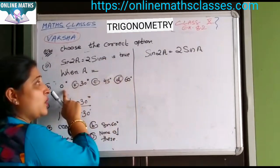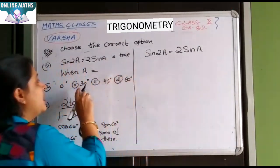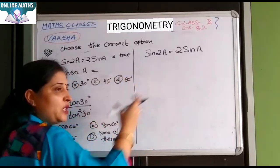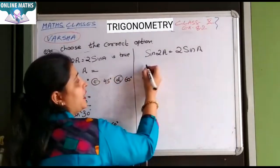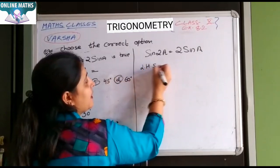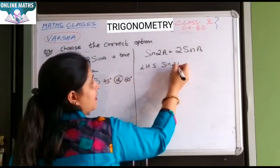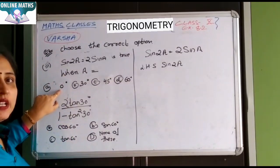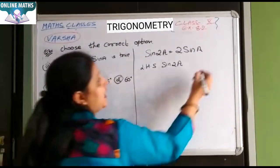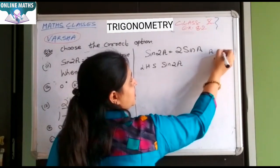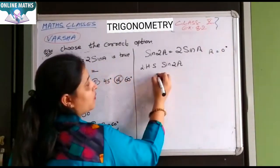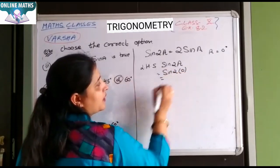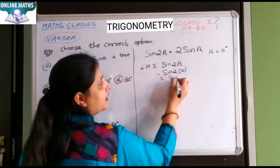Aapko LHS equals to RHS ke means. Aap ismein values ko put karke dekhiye. A agar 0 rakhenge to in ki value equal. Values ko put karke dekhna hai. It means dekho LHS, sine 2A. First value diya hai. 0 degree. Agar aap A equals to 0 degree put karoge.